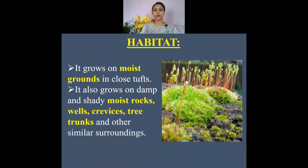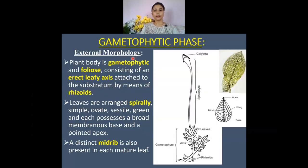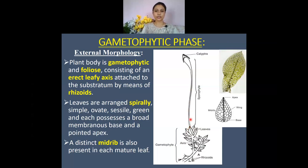This genus requires moist habitats for its best growth. It grows on moist grounds, damp and shady environments, on rocks, wells, crevices, tree trunks, or any other similar substrates with sufficient moisture. The gametophytic external morphology of Funeria is quite complex — it has rhizoids, an erect leafy axis, whorls of spirally arranged leaves, and a sporophytic structure bearing a capsule.